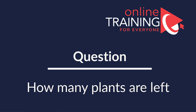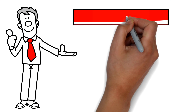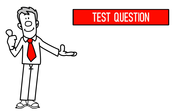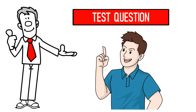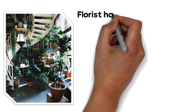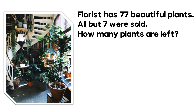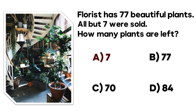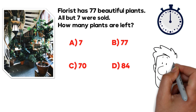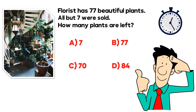I am very excited to present you with a simple but very tricky question which tests your math skills as well as attention to detail. A florist has 77 beautiful plants; all but seven were sold. How many plants are left? You have four choices: choice A is 7, choice B is 77, choice C is 70, and choice D is 84. Do you think you know the answer?